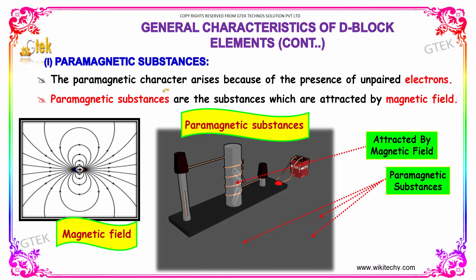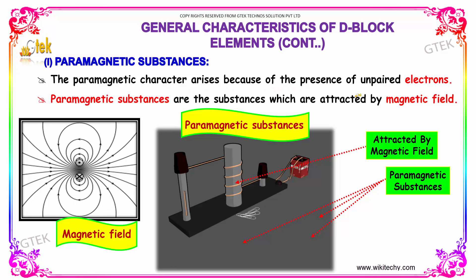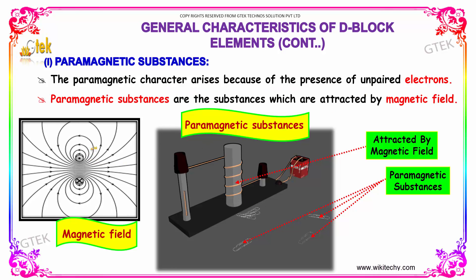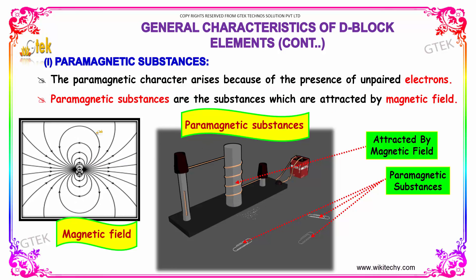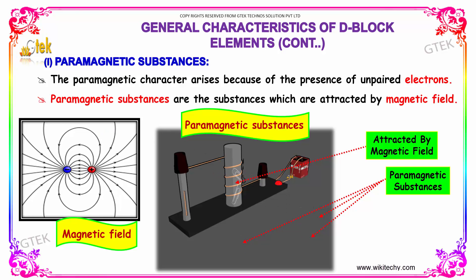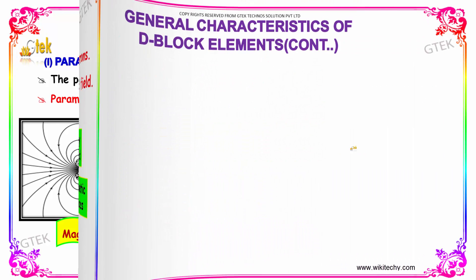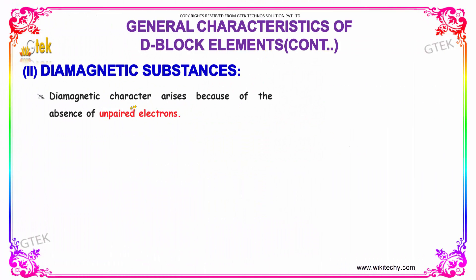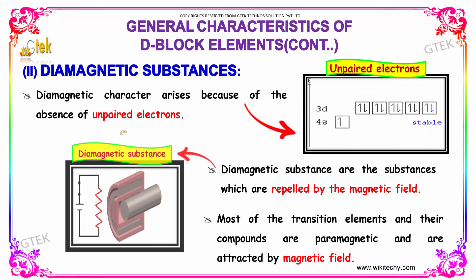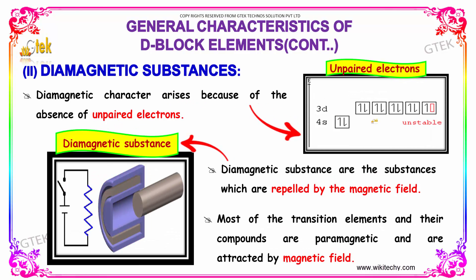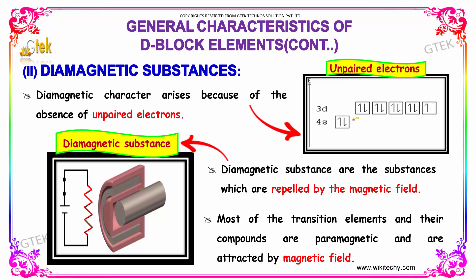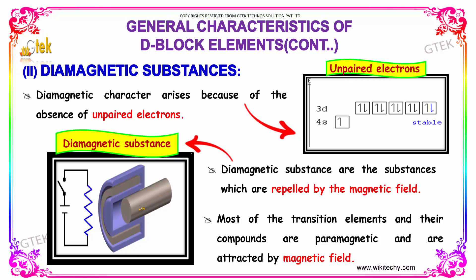The paramagnetic characteristic arises because of the presence of unpaired electrons. Paramagnetic substances are substances which are attracted by the magnetic field. Diamagnetic character arises because of the absence of unpaired electrons. Diamagnetic substances are substances which are repelled by the magnetic field.